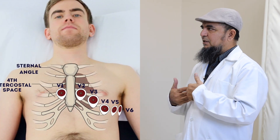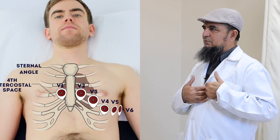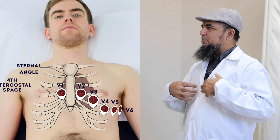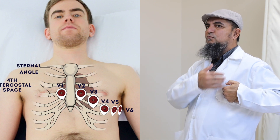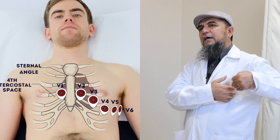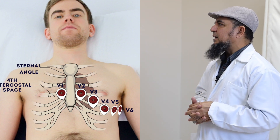V1 is at the fourth intercostal space on the right side of the sternum. V2 is on the left side of the sternum at the same space. V5 is at the midclavicular line and V6 is in the anterior axillary line.